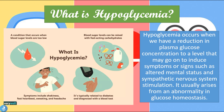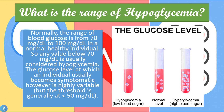Hyperglycemia is when we have blood sugar levels which are too low for the body to handle. So what is the range of hypoglycemia? Normally the range of blood glucose levels is from 70 milligrams per deciliter to 100 milligrams per deciliter in a normal healthy individual. Any value below 70 milligrams per deciliter is usually considered hyperglycemia. The glucose level at which an individual usually becomes symptomatic is highly variable, but the threshold is generally below 50 milligrams per deciliter.